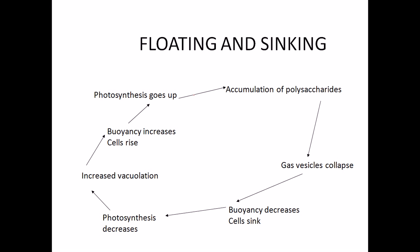Cyanobacteria can float and sink, which is important since they primarily live in water. They regulate buoyancy using gas vesicles inside the cell. When gas vesicles are filled with gas, their weight decreases and buoyancy increases, causing the cell to float. When they need to sink, the gas vesicles collapse, gas escapes into the environment, buoyancy falls, and the cell sinks.